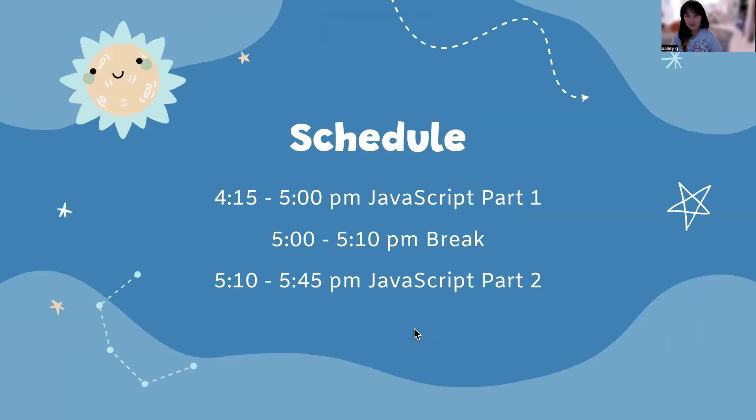So let's get into the schedule. Just as a reminder, if you haven't taken a class before or are not yet familiar with the schedule, we begin class at 4:15 and then we end at 5. From 5 to 5:10, we have break. And then from 5:10 to 5:45, we have the second half class, then class ends at 5:45.